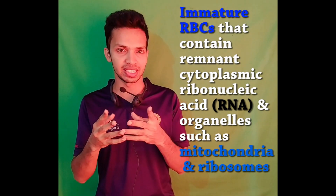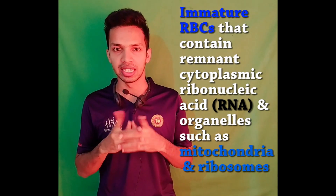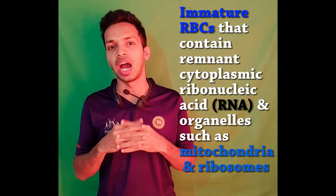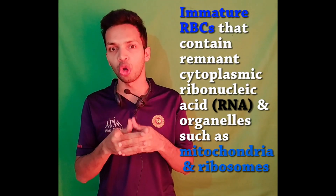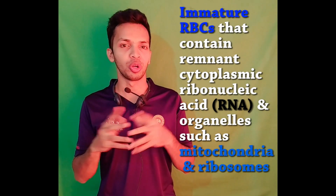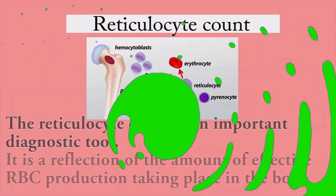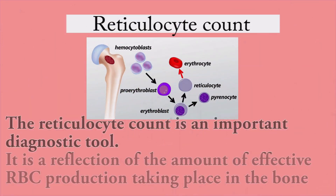What is the definition of reticulocyte? Reticulocyte is an immature RBC that contains remnant cytoplasmic RNA and organelles such as mitochondria and ribosomes. The reticulocyte count is an important diagnostic tool. It is a reflection of the amount of effective RBC production taking place in the bone marrow.